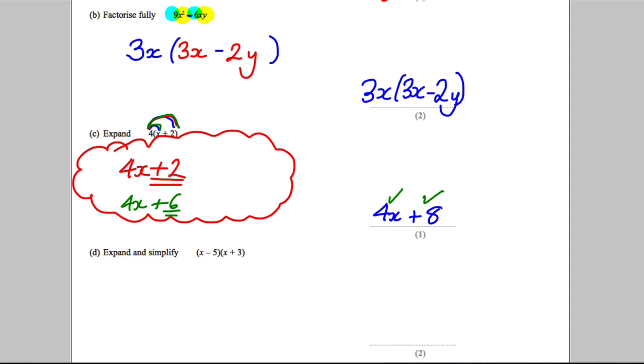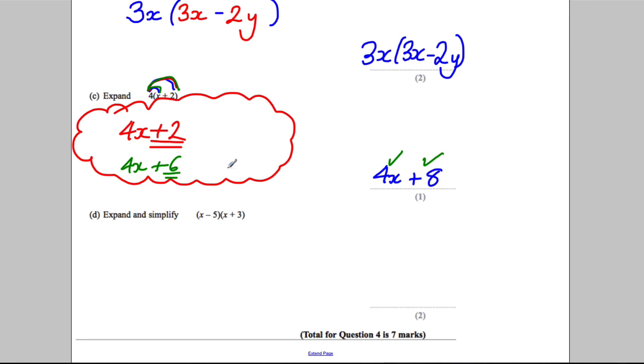Okay, and then the last one. Expand and simplify this. Well, there are two ways of doing it. One way would be a little table here. So what you'd have is something like this. You'd put x and subtract 5 along here, and you'd put x and plus 3 here.